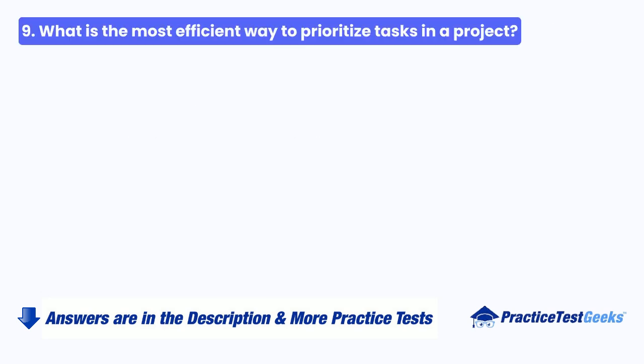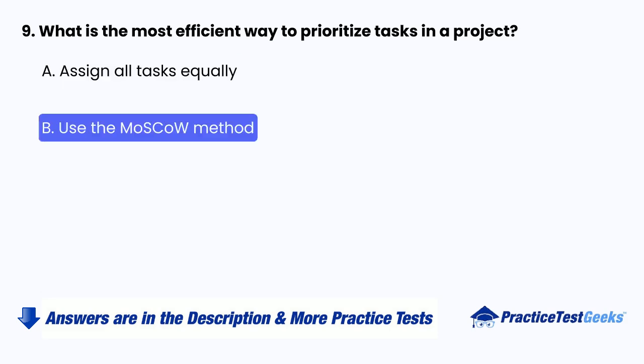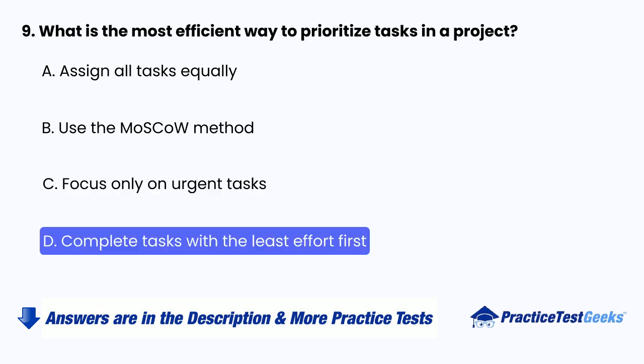Question 9: What is the most efficient way to prioritize tasks in a project? A. Assign all tasks equally. B. Use the MoSCoW method. C. Focus only on urgent tasks. D. Complete tasks with the least effort first.